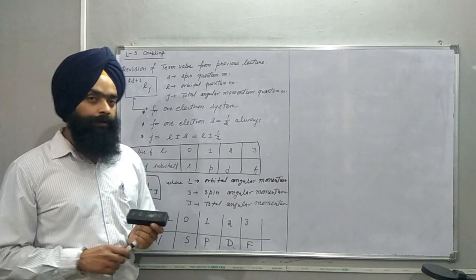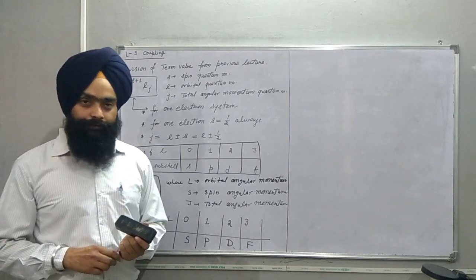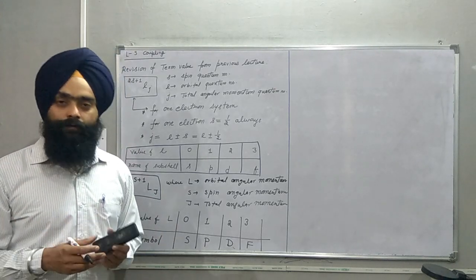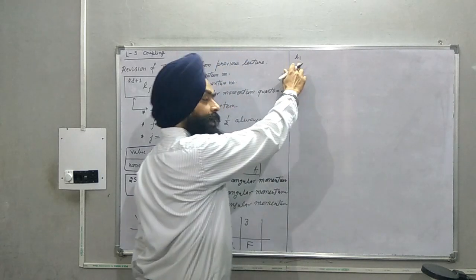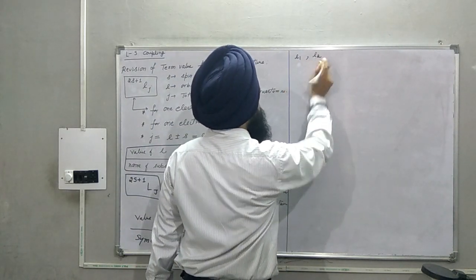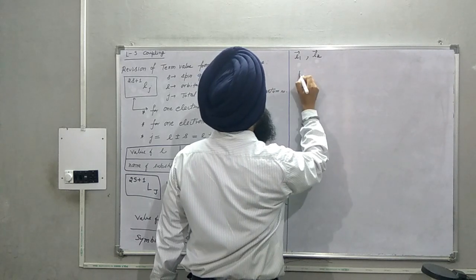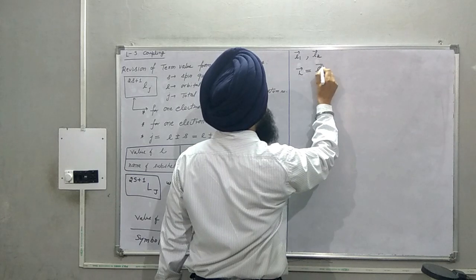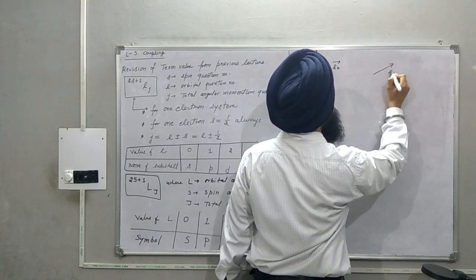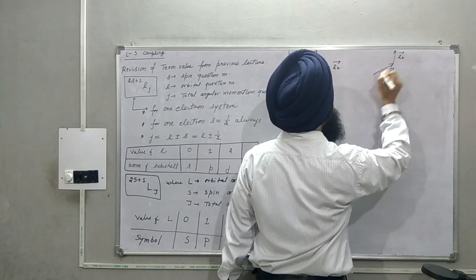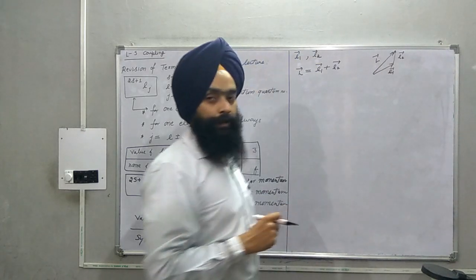Now we are going to discuss LS coupling, which is the coupling between the angular momenta of a multi-electron system. For simplicity, we take the example of two electrons. Suppose we have a two-electron system where one electron has angular momentum L1 and the second has angular momentum L2. These are vector quantities, so the total capital L is the vector sum of L1 and L2. In pictorial representation, we apply the triangle law of vector addition.